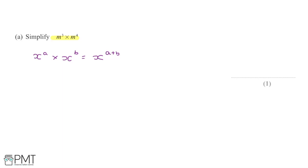This is a law of indices, so when we have 2 lots of m to different powers, we can simply add the powers together. Following the same principle, m to the power of 3 plus 4 gives us an answer of m to the power of 7, which is a fully simplified answer to this question.